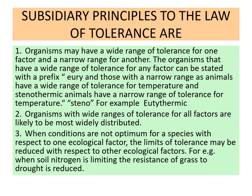When we talk about tolerance, we have two terms: EURY and STENO. The EURY term refers to a broad range of tolerance — some individuals can tolerate a broad range of variation in temperature. Other individuals cannot tolerate a broad range; they live in a narrow range, and such individuals are known as STENO. For example, with respect to temperature: stenothermal means narrow range, eurythermal means those which can tolerate a broad range of temperature.